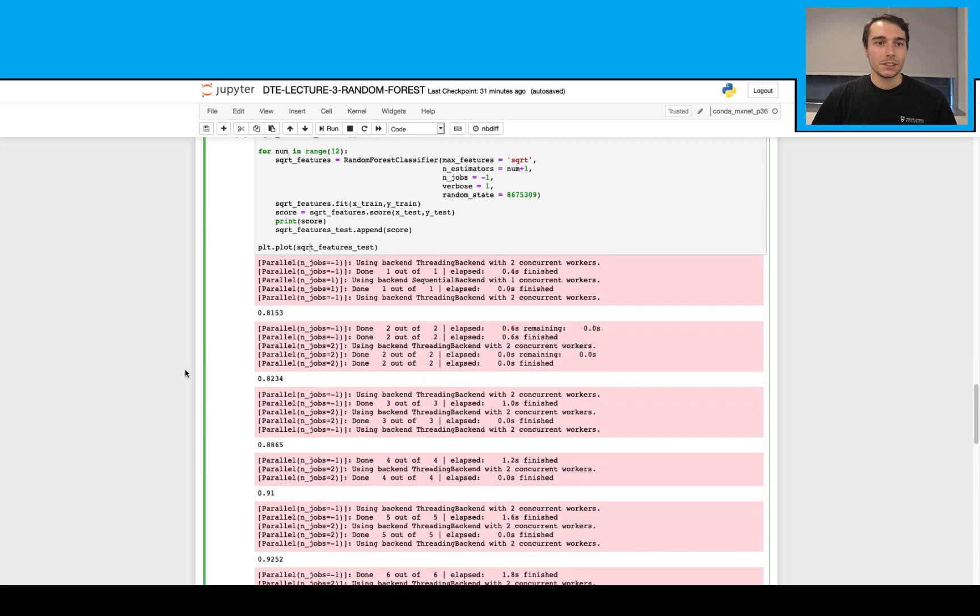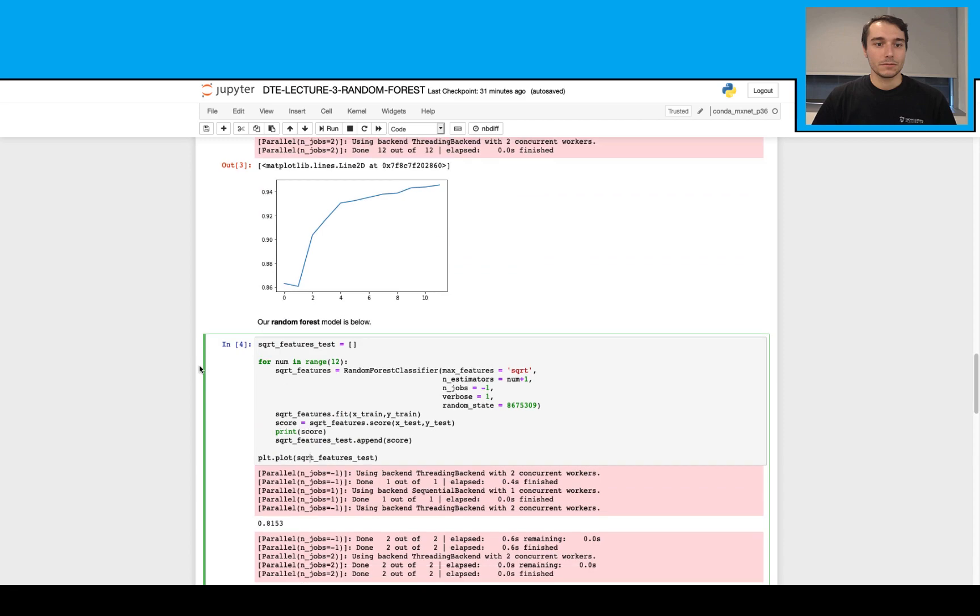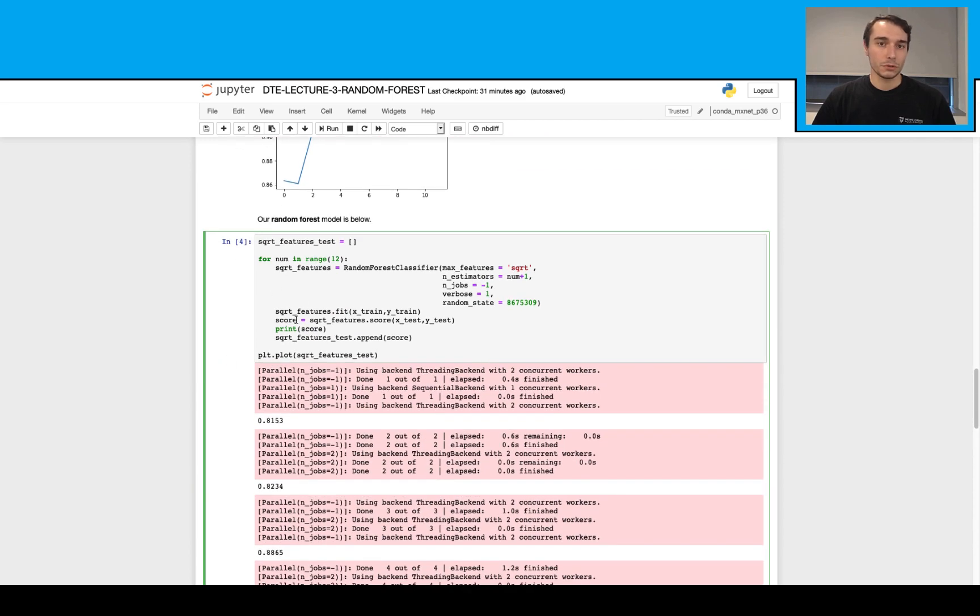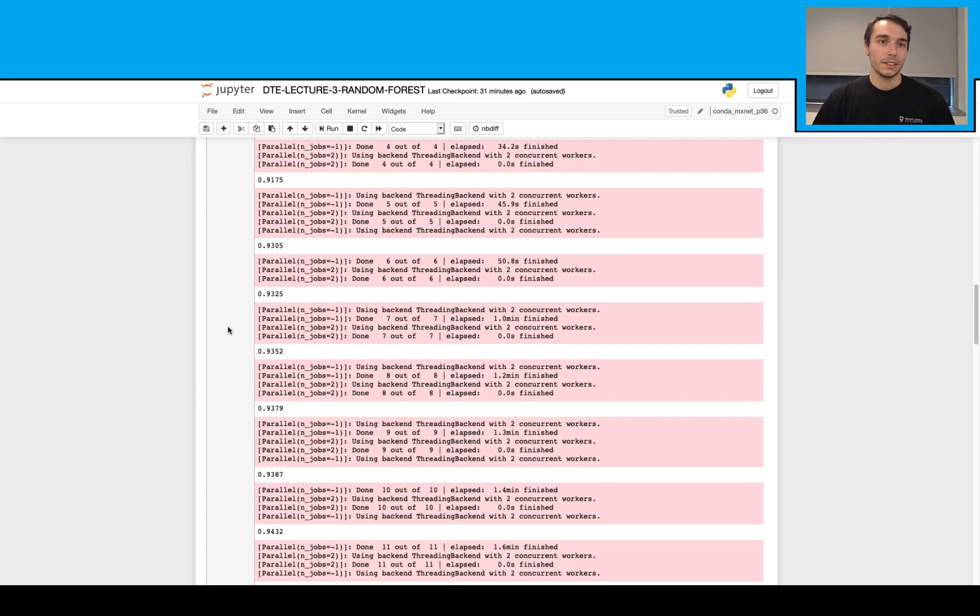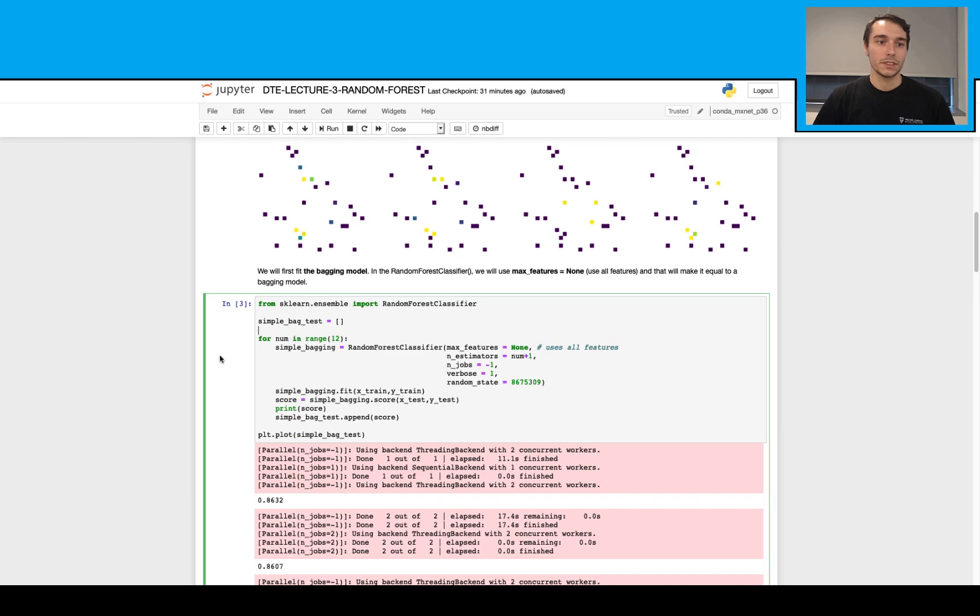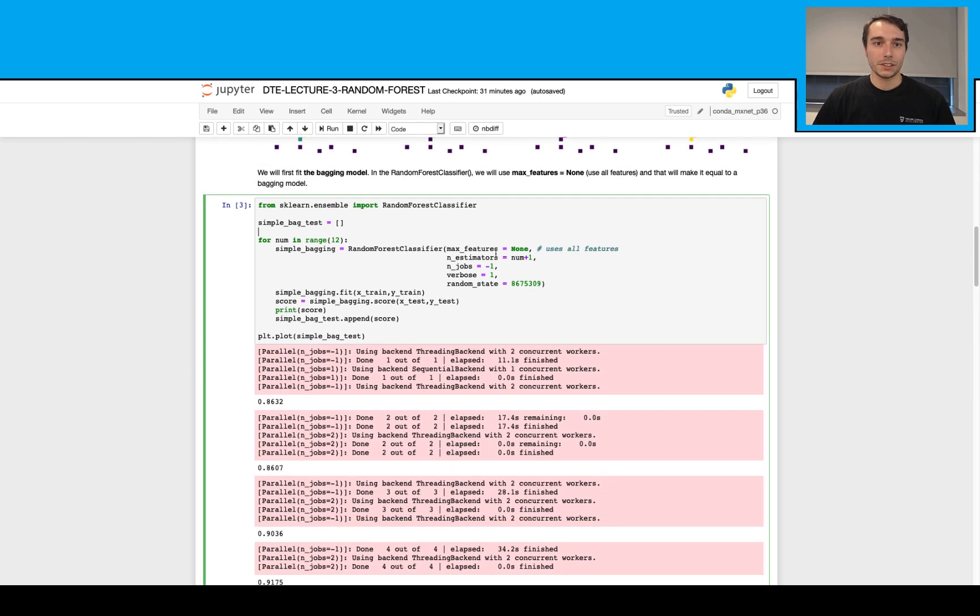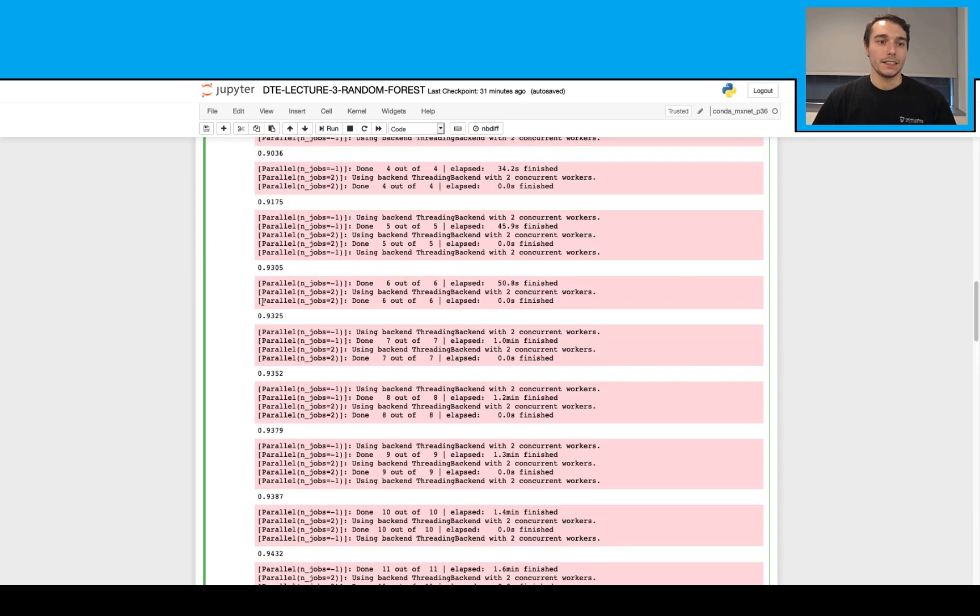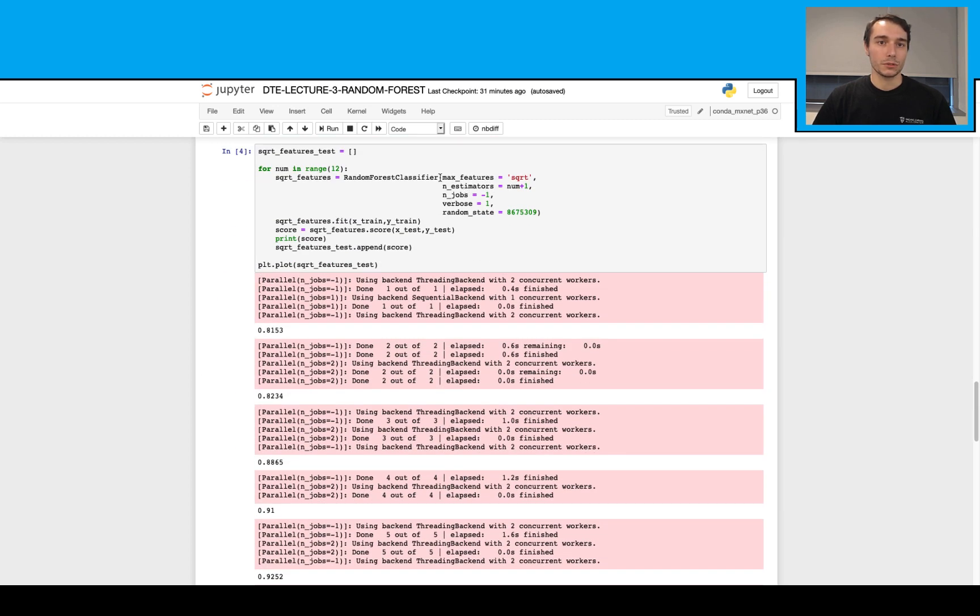Once you run this, you will also realize that your random forest code runs much faster than your simple bagging test model here. This is coming from the fact that this uses all the features in the decision trees. And this one just uses the square root of all the features. So this makes a huge impact in terms of the speed of this algorithm.